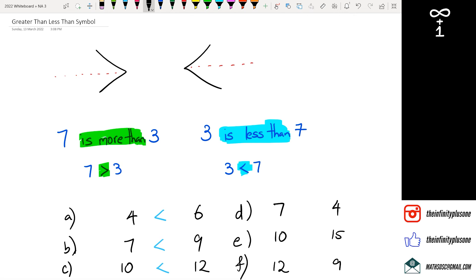7 is greater than 3 or is more than 3, so we're going to be using the greater than symbol. 10 is less than 15, and because it's less than 15, we're going to be using this one here. And finally, 12 is also less than 9, which means we will use this symbol.